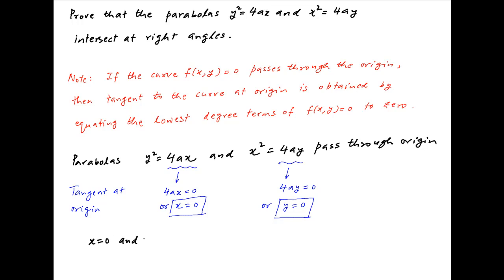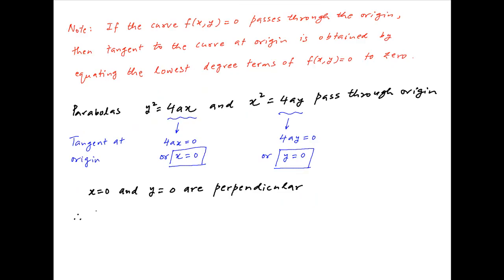Therefore, the tangents to these curves at the origin are x equals 0 and y equals 0 respectively, and these two lines are perpendicular to each other. It therefore follows that the given parabolas intersect each other at the origin orthogonally, which is the required result.